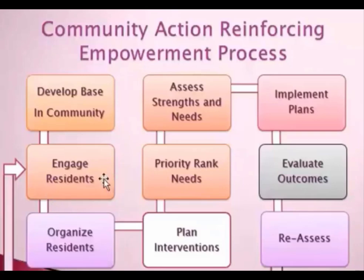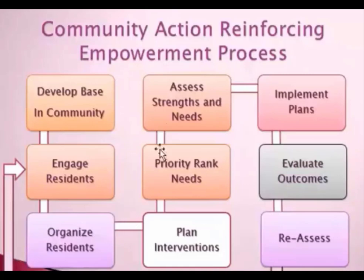Next, one would look to engage residents — meeting with residents, conducting focus groups, interviewing key informants in the community, and conducting both a community needs assessment and an asset assessment, looking at both the strengths and needs of the community. Next, organizing residents: convening a community action team based on interviews and community meetings, which would be the source of assisting and making choices about priority needs. Then plan interventions to offer the community, followed by priority ranking of the interventions and needs, completing the assessment of strengths and needs, and moving towards the actual plan.